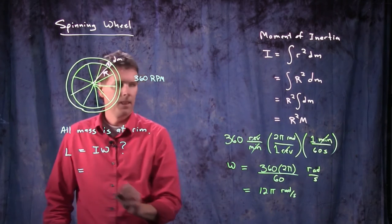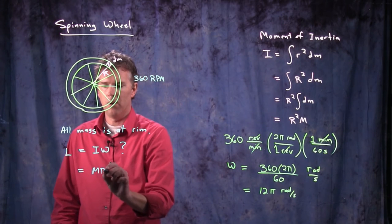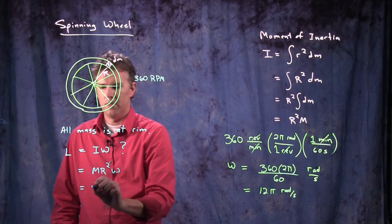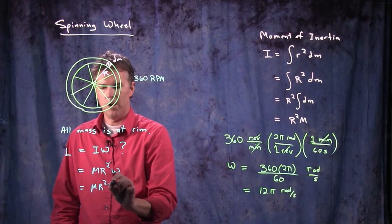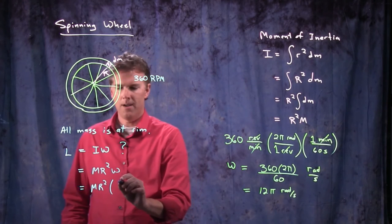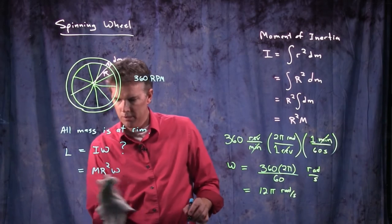Angular momentum is I, which is m r squared times omega. m r squared and omega we said was this, 12 pi. And actually, let's back up a step. Let's put in some values for a wheel.